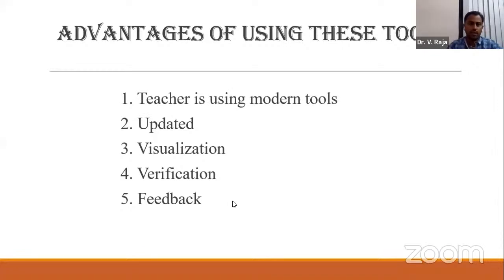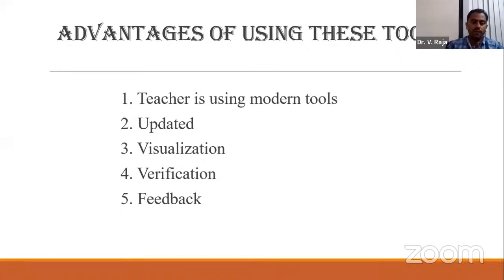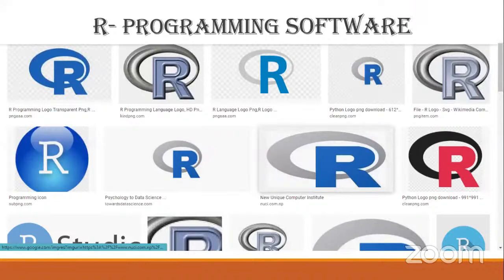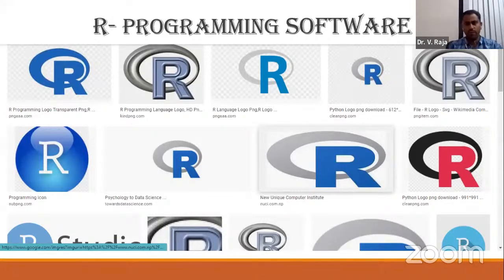These are the advantages of using open source tools — there may be many more. Now let's see the softwares one by one. Almost all are known softwares, but I'll give you the advantages and how one can use them for our purpose. We are not going to teach a separate software course — we use the software within our existing course. The first is R programming. Most faculty might know R because nowadays everything runs with the help of R and Python.